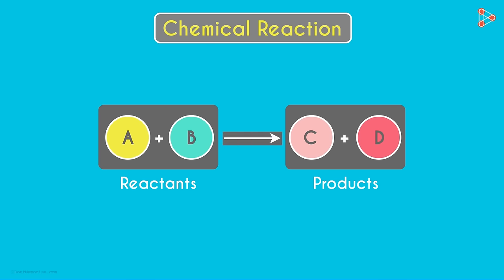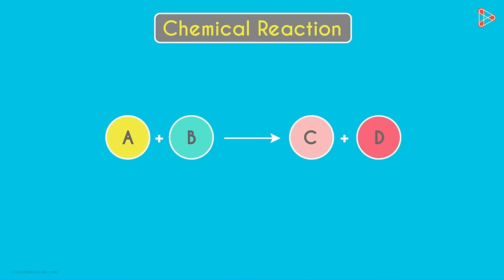The arrow shows the direction of the chemical reaction. A and B react to give us C and D. If there's any condition, it's written above the arrow. For instance, if A and B react after heat is applied, it will be written like this.